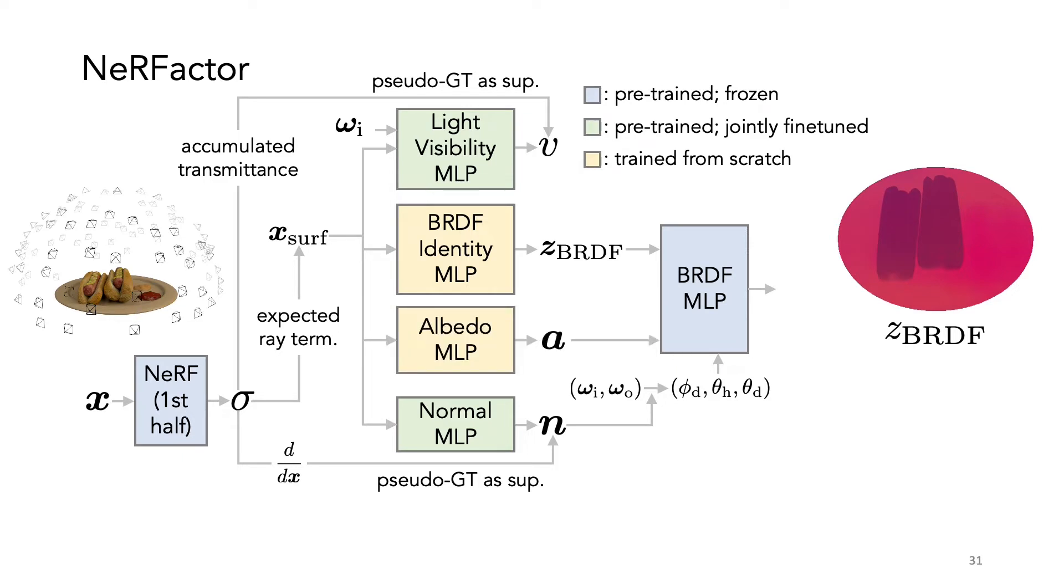We still need diffuse colors to complete the BRDFs. So we add an MLP to predict for each surface XYZ the albedo, looking like this.